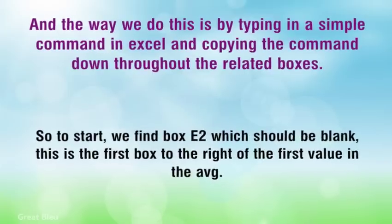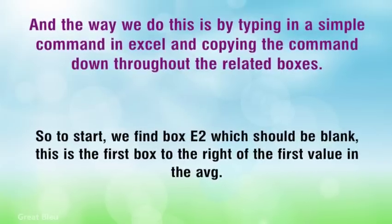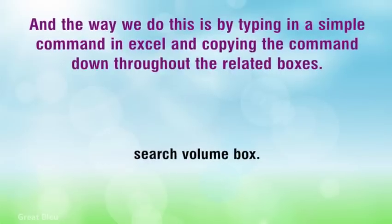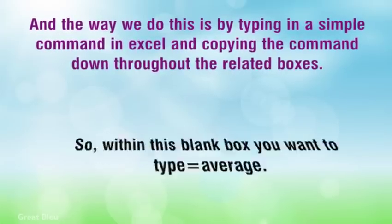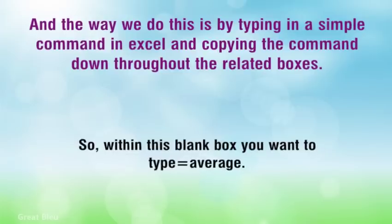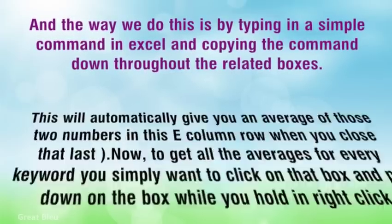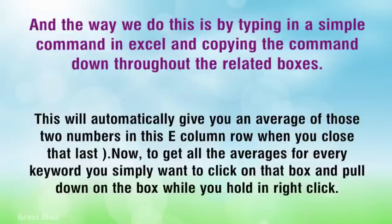To start, we find box E2 which should be blank — this is the first box to the right of the first value in the search volume column. Within this blank box you want to type equals average. This will automatically give you an average of those two numbers in this E column row when you close that last parenthesis.